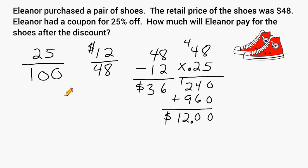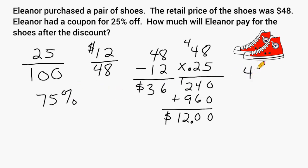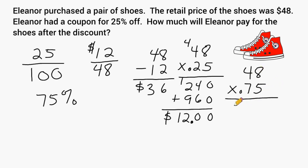Another way we can think about this problem is: we know that the total price would be 100% of the price, and if we get 25% off of the original price, that means we have 75% remaining to pay. So another strategy is to take the total price, which is $48, and multiply it by 75 hundredths, or 75% written as a decimal. So let's go ahead and multiply those two values together. 5 times 48 is 240, and we put a 0 in this position, and then we do 7 times 8, which is 56.